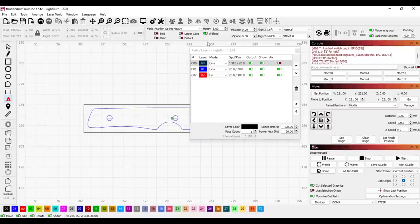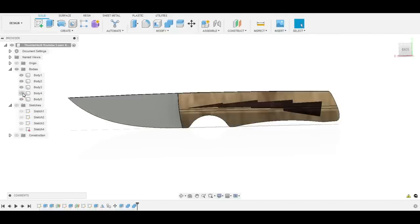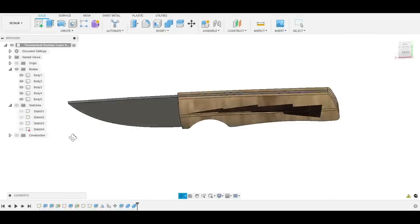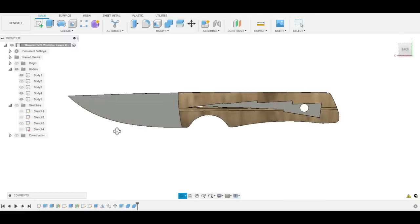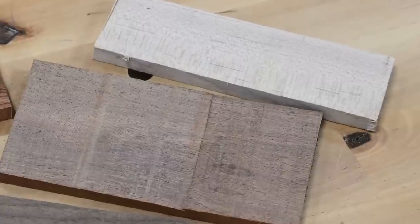So what I'm focusing on for this project are these handle scales. I drew this little lightning bolt and extruded it into the handle. What this will allow me to do is to produce basically a negative and a positive for a handle inlay composed of two contrasting woods. In this case, hard maple and walnut.